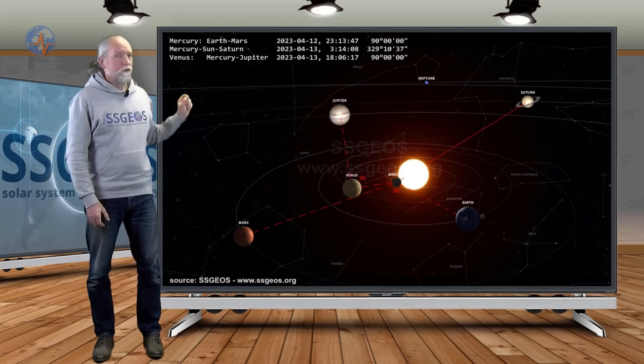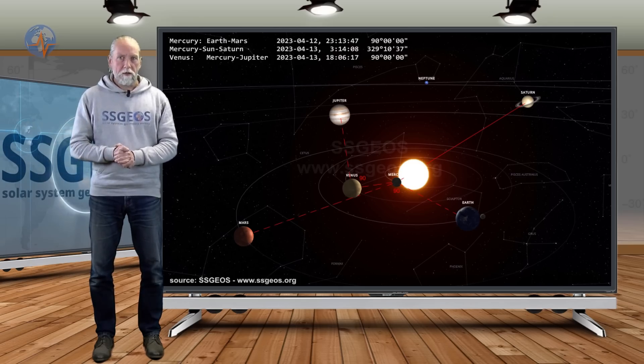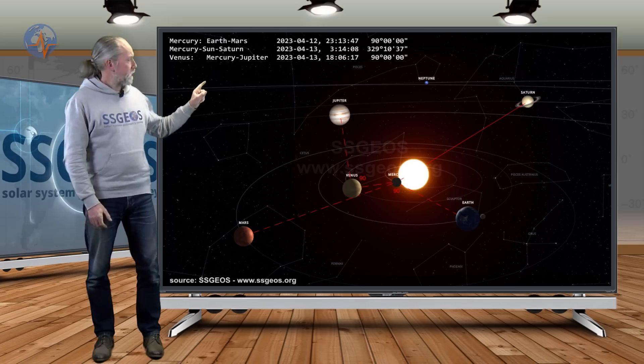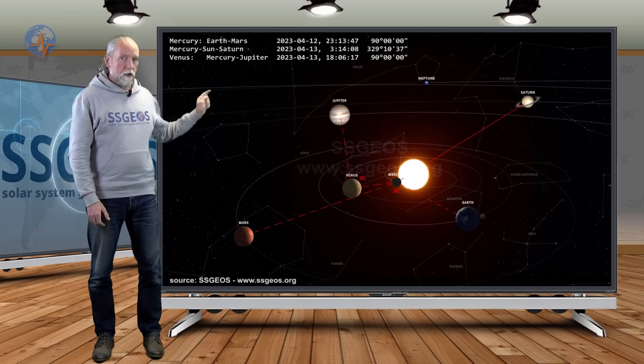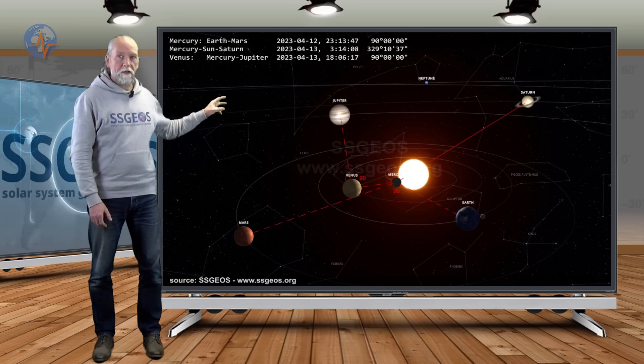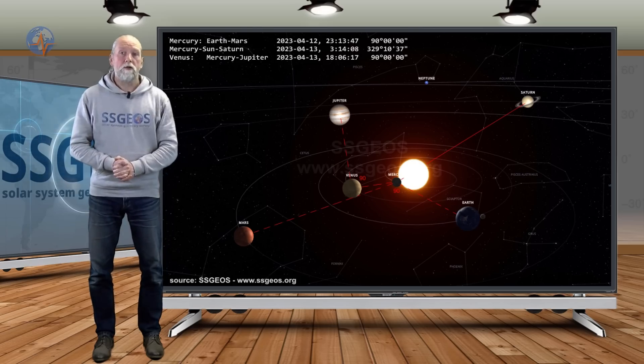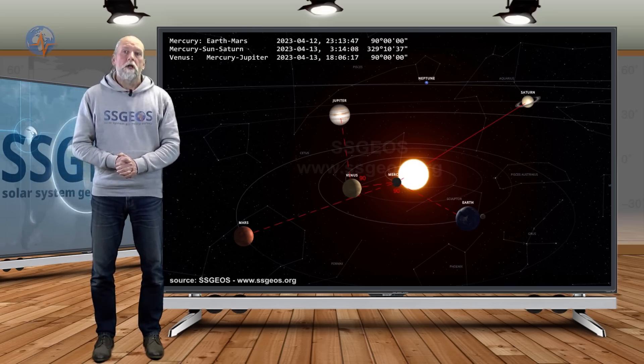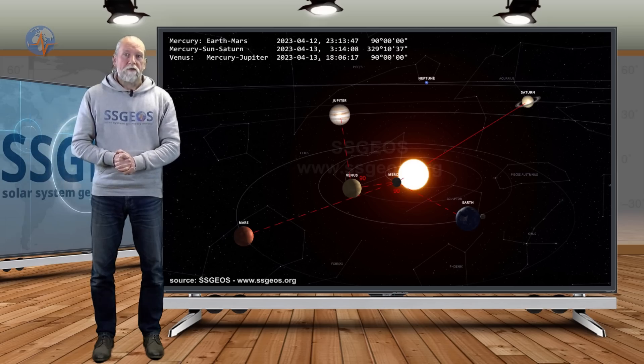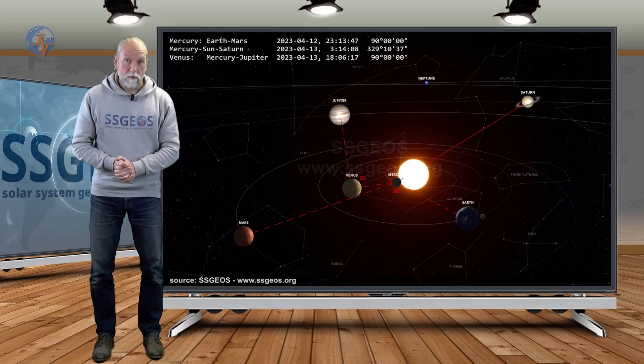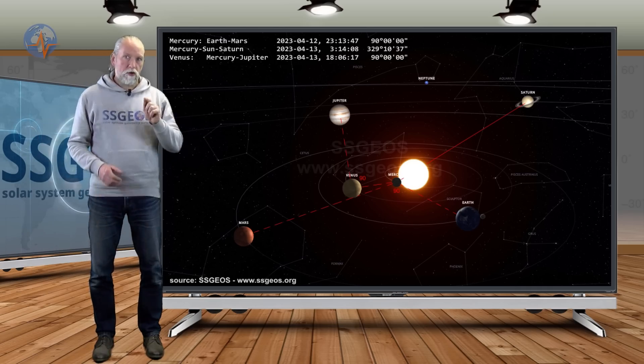So I have to make a correction here, because on the 13th I said that we had two 90 degree angles with Mercury. Mercury was involved, yes, but there was only one 90 degree angle with Mercury, which was Mercury, Mars and Earth. The other 90 degree angle also involving Mercury was actually with Venus - Mercury, Venus and Jupiter. Speaking of which, we're going to have the same 90 degree angle again with Venus, Mercury and Jupiter, because they are moving relatively close to each other simultaneously and they remain closely aligned in a 90 degree angle. That will be exact again later on the 22nd, and I will show you in a minute.